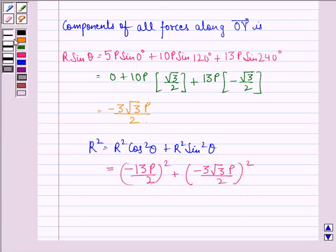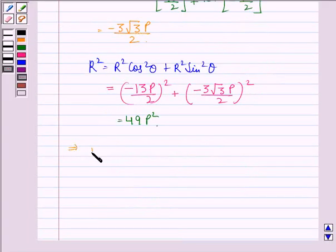Since R squared is equal to 49p squared, this implies that R is equal to the square root of 49p squared, that is equal to 7p.